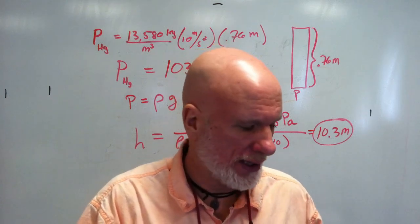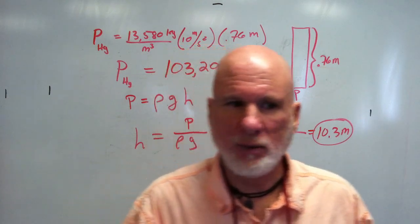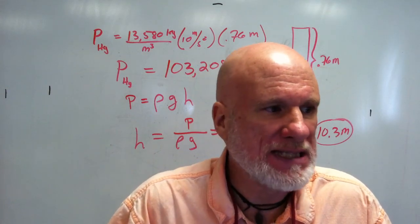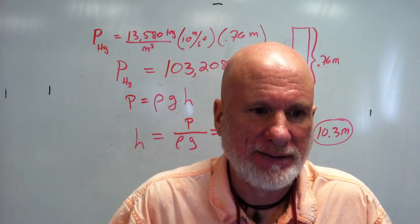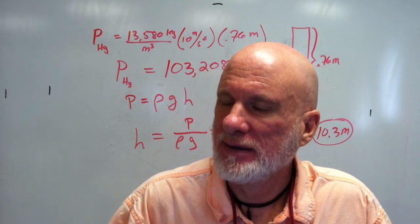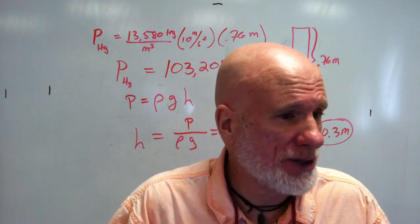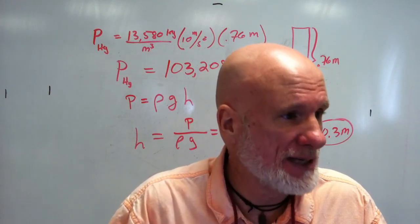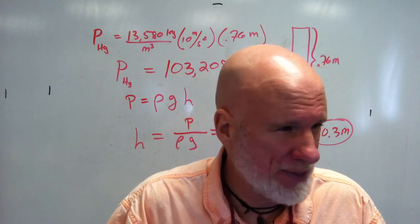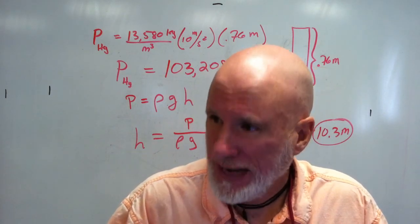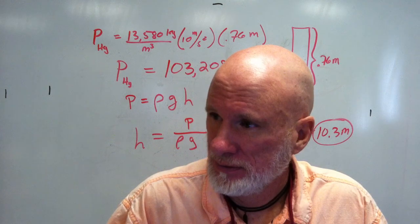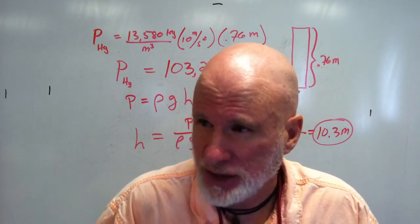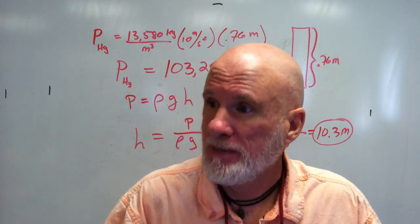This is very important when you do your reading. The significance of 0.76 meters of mercury — that's one atmosphere of pressure, or 760 millimeters of mercury. Remember from chemistry last year: that is the pressure of one atmosphere.